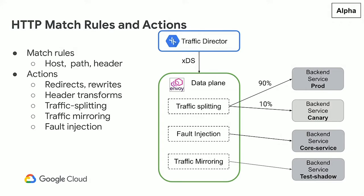For request matching, you specify rules on what to match for incoming requests. You can set up a host match, a path match, with variants like prefix match, suffix match, and regular expressions, or you can set up matches based on anything in your header, like cookies, user agents, and so on. Once a match is found, you can perform certain actions on the matched request. The standard actions are redirects, rewrites, header transforms, or sending the traffic to a particular service.